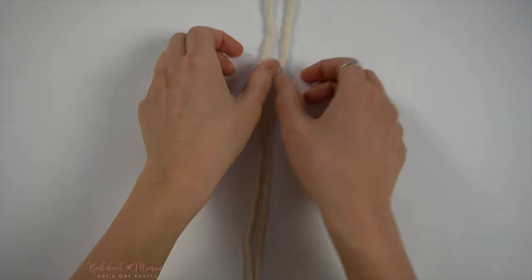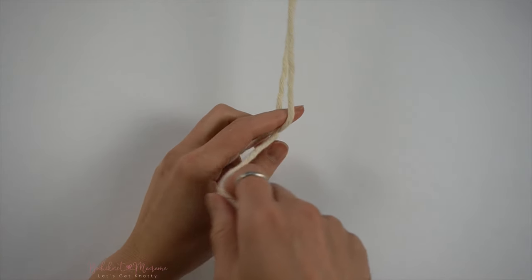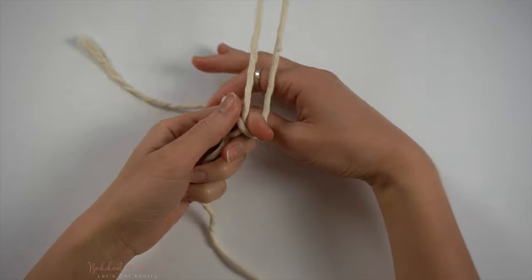Starting with two strands of cord, take the right cord and wrap it around the left cord through the back and back over to the right.